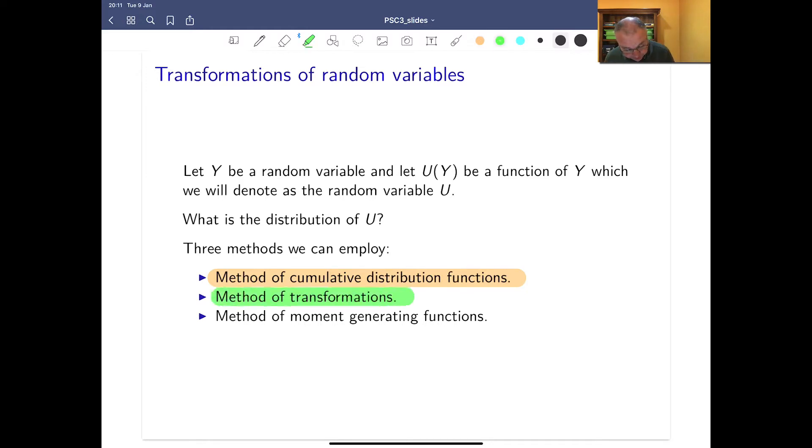In that one we will find the CDF of our new distribution, then differentiate it and get our PDF. The next one, the method of transforms, is very similar to the method of CDF, but what we're doing is we find an inverse function and then we substitute that into the PDF. And then finally, the method of moment generating functions, we're going to calculate the moment generating function for our new random variable and look at the fact that that's unique.